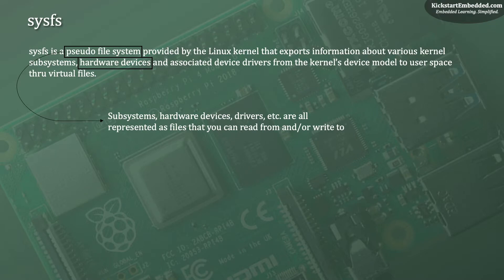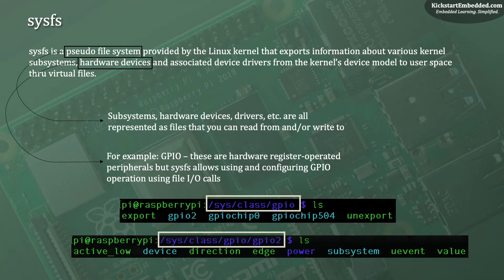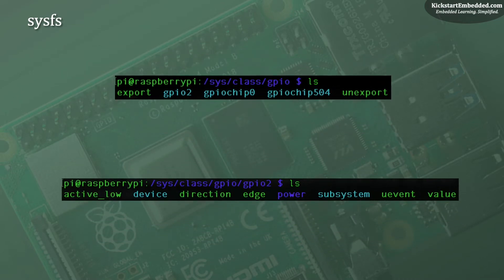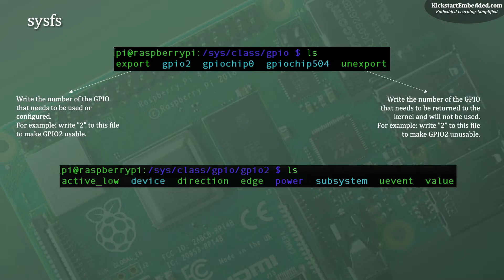As an example, GPIO are generally hardware register-based peripherals inside processors, but using the SysFS framework the GPIO is represented as a set of files. By far the most important files are the export and unexport. The export file is written to when you want to make a particular GPIO usable. For example, to make GPIO2 usable, you just write the string with the number 2 to the export file. In order to make GPIO2 unusable and give it back to the kernel to be allocated to other applications, write the string 2 to the unexport file. After a particular GPIO is exported, a folder with the name GPIO and then the number is created — for example, if we wrote 2 to the export file, you would see a folder called GPIO2.